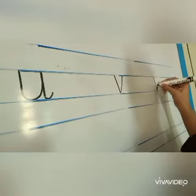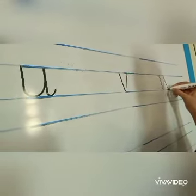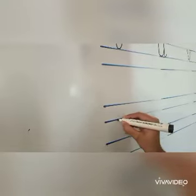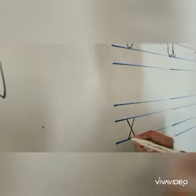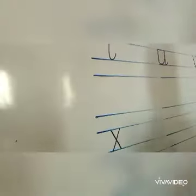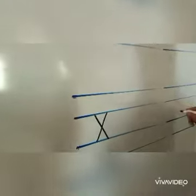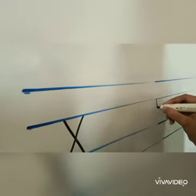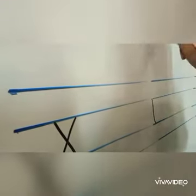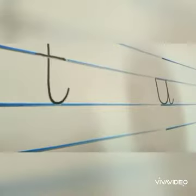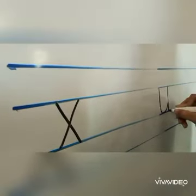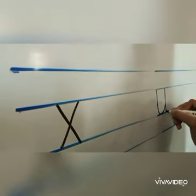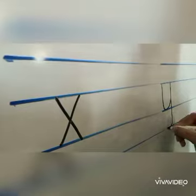And when you will make 2 times V, it will make W. Like this. X. For making Y, you have to make U. Like this.